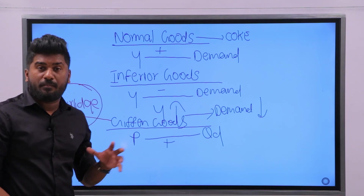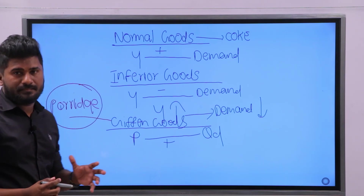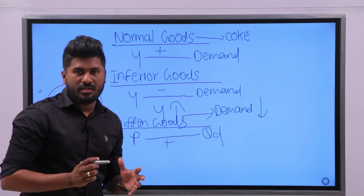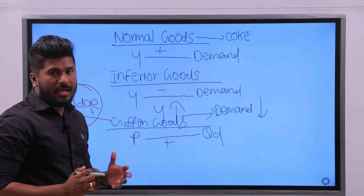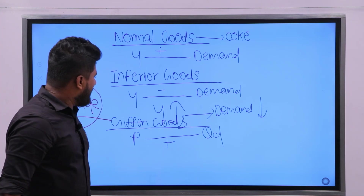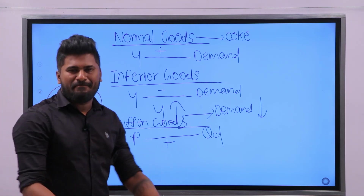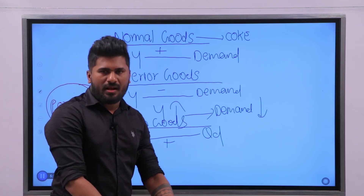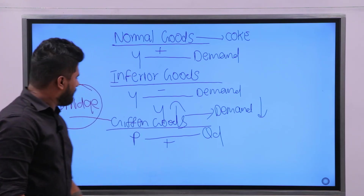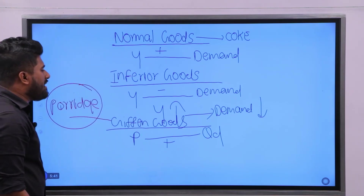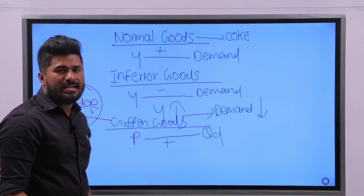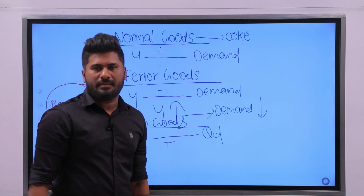These are goods used by very poor people. An important thing to understand is that every Giffen good can be considered as an inferior good.